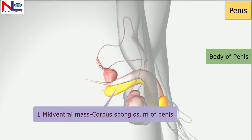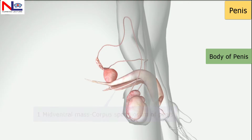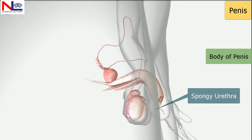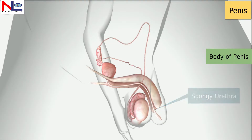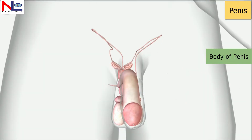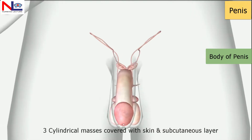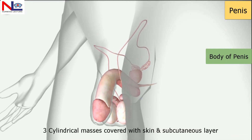The corpus spongiosum consists of the spongy urethra. As you can see here, the spongy urethra is the part of the urethra which runs along the corpus spongiosum, which is why it is called the spongy urethra. All three masses are enclosed by skin as well as a subcutaneous layer.